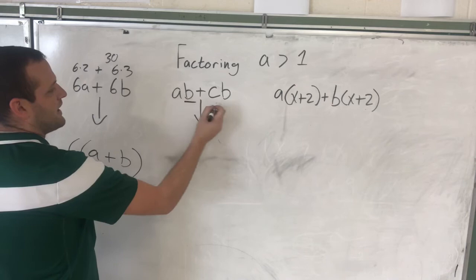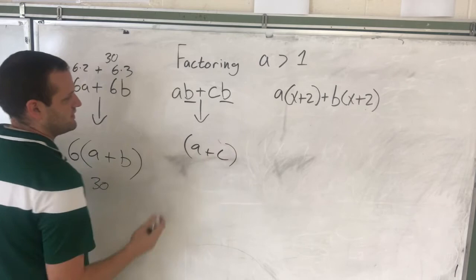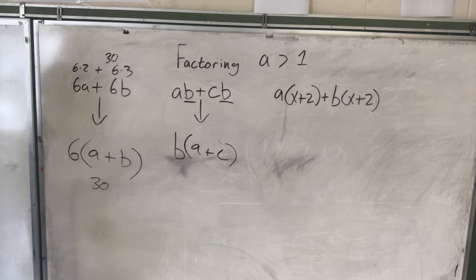Here on this one, what's the same? Well, they both have a B. So kind of like over here, they both have the six. I was able to bring the six out, leave that which is different inside, so the A plus C stays on the inside. B comes to the outside. These are equivalent. They are the same equation.